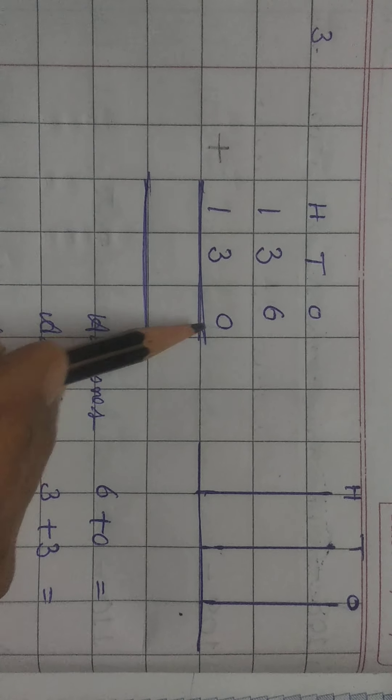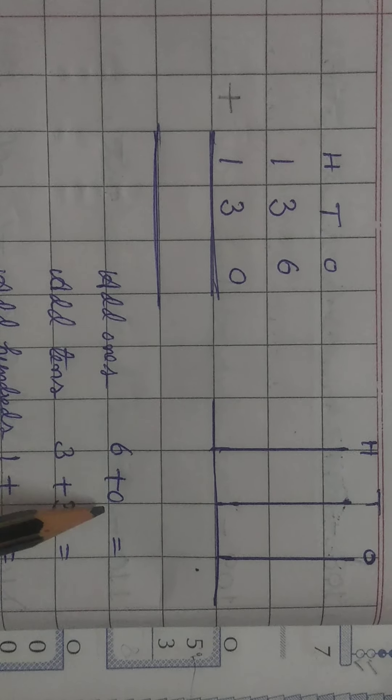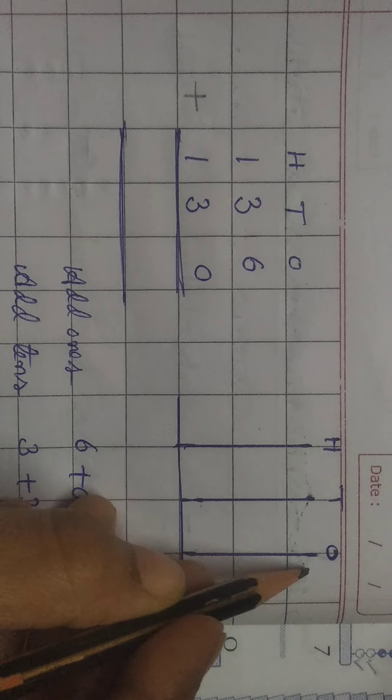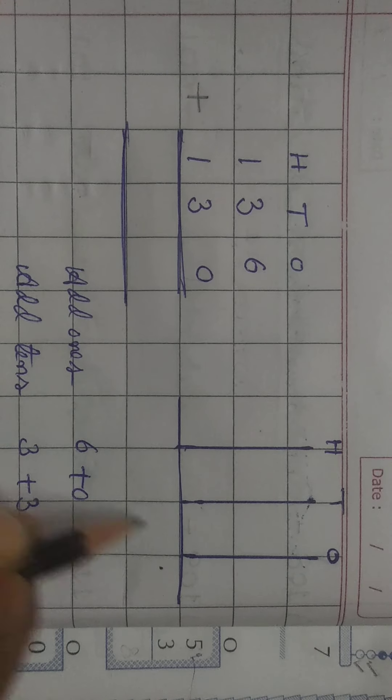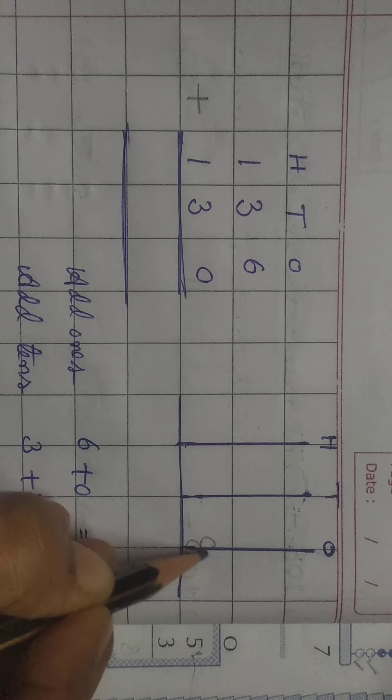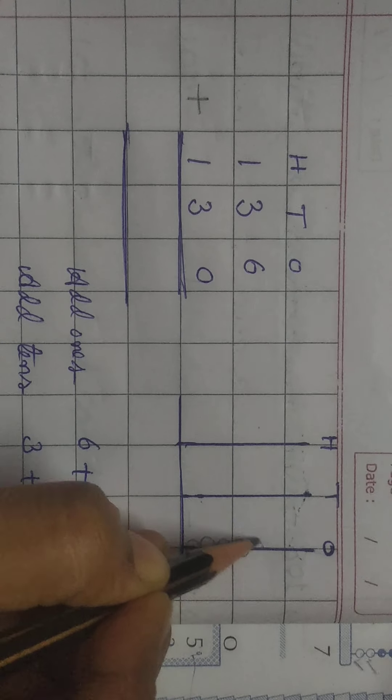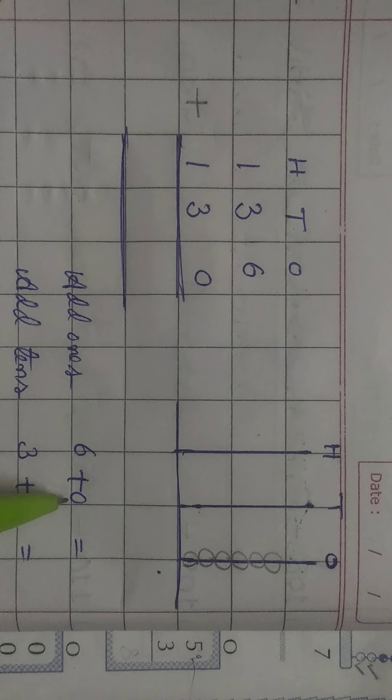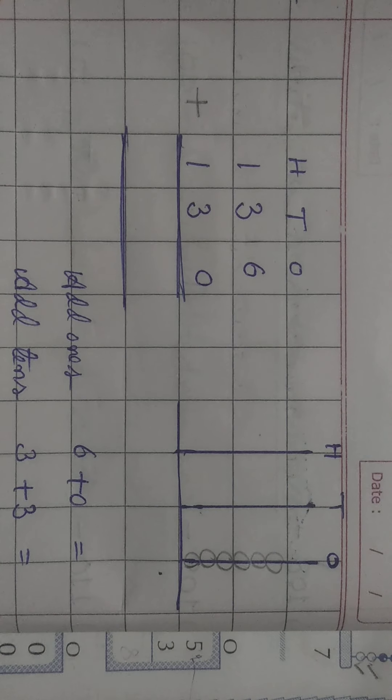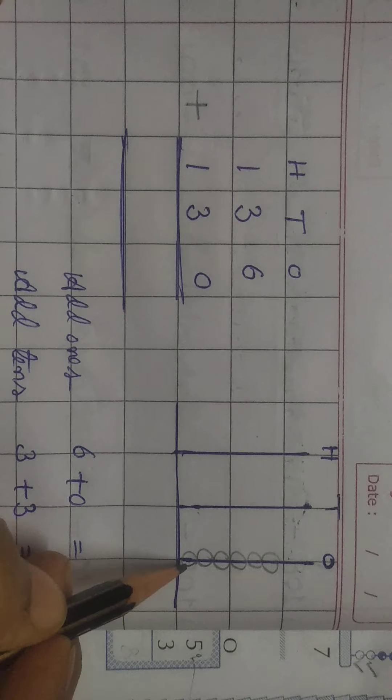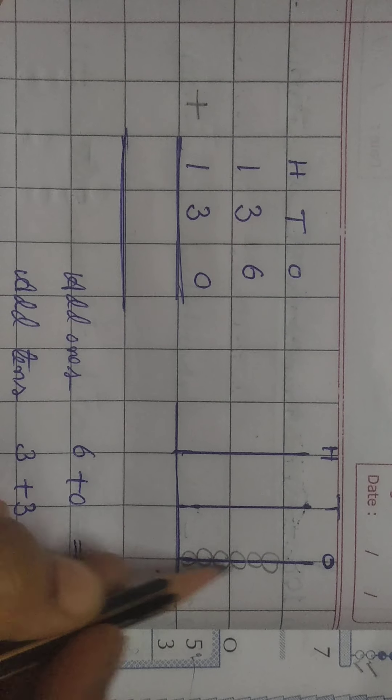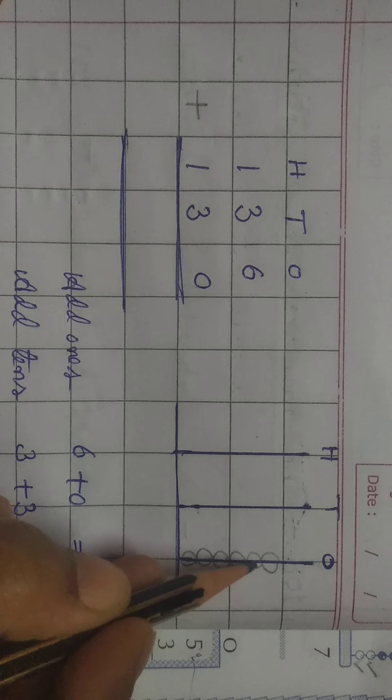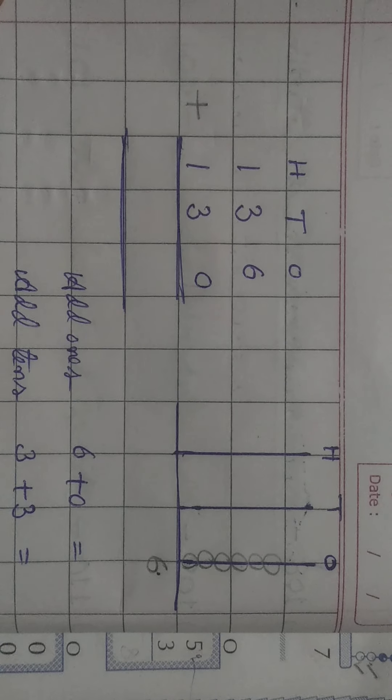the numbers are 136 and 130. We will add these two numbers. 6 plus 0 is how much? 6 plus 0. First, we will add ones. So, on the abacus, draw 6 beads first. 1, 2, 3, 4, 5, 6. And 0. Second one is 0. Second number is 0. 0 has no value. So, how many beads are there in one's place? 1, 2, 3, 4, 5, 6. Answer is 6.